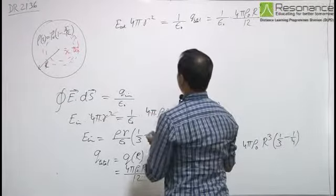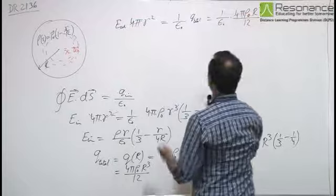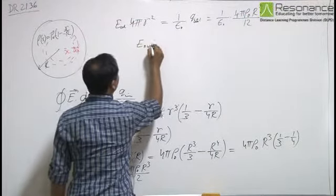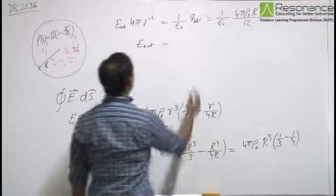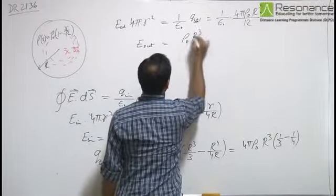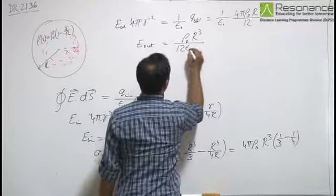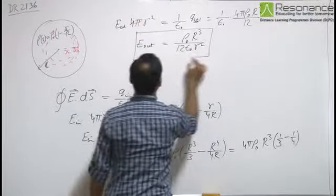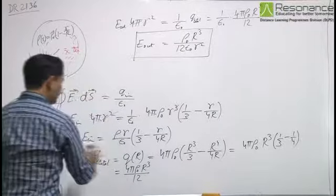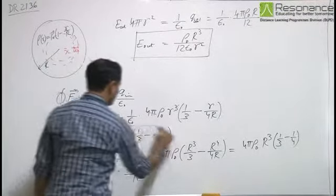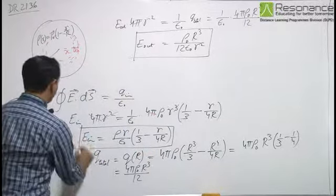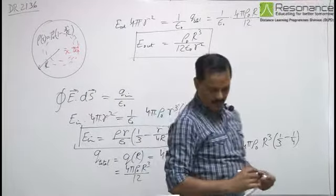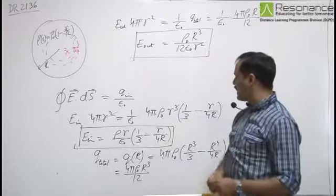Cancelling 4π from both sides, we obtain E_outside = ρ₀R³/(12ε₀r²). This is the electric field outside the ball. Together with E_inside derived earlier, these are the answers to the first part — electric field inside and electric field outside.